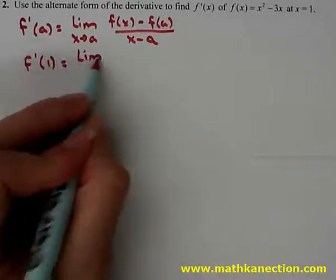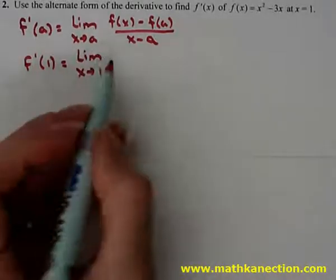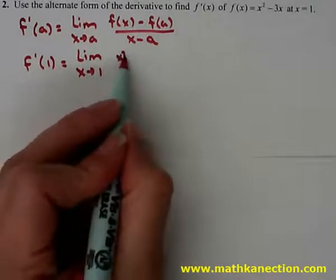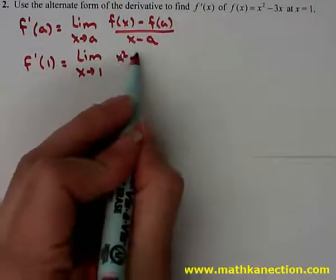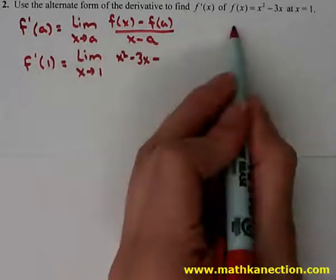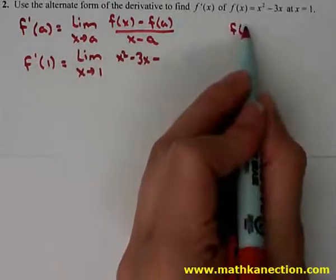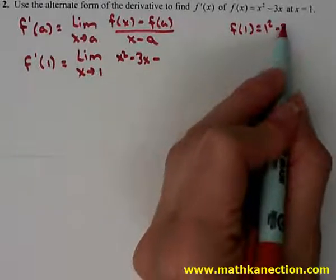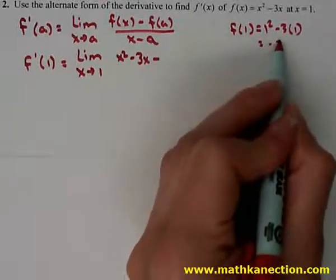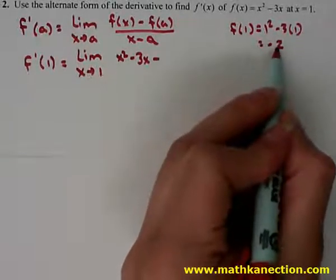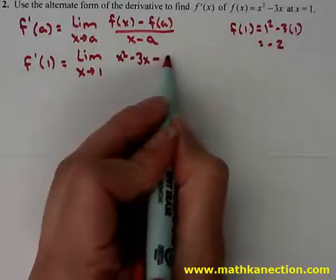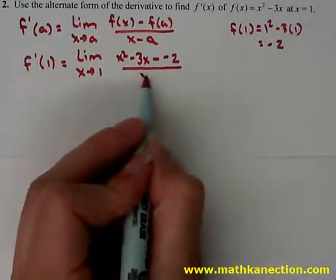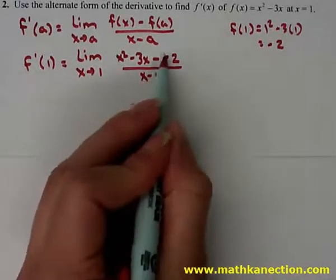f prime of 1, then, is the limit as x approaches 1 of f of x, which is x squared minus 3x, minus f of a. On the side we'll calculate f of a, which is f of 1, equal to 1 squared minus 3 times 1, which is negative 2. So we'll subtract negative 2, all over x minus 1.